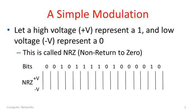Here is a simple modulation scheme — the one you would think of first if you were just trying to come up with one on your own. We will simply use a high voltage to represent a 1 and a low voltage to represent a 0. This is a modulation scheme called NRZ, for non-return to zero. The name is for archaic reasons, don't worry about it. We can work through an example — I have a sequence of bits here and I'm going to draw the waveform underneath.